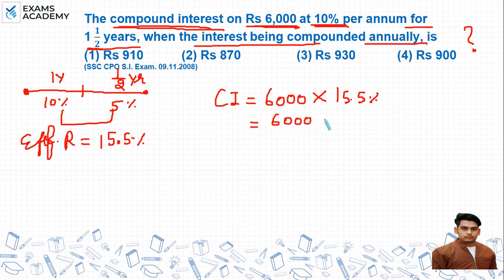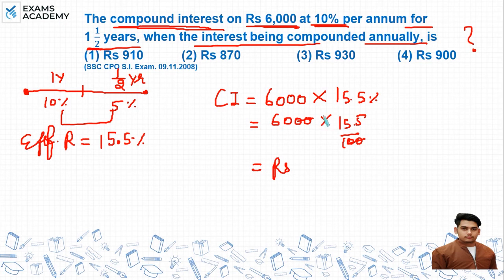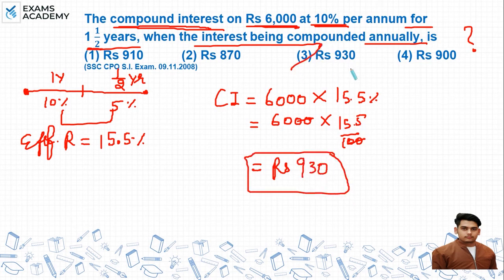Now to find compound interest, we calculate 15.5% of 6000. So solving this: 15.5 over 100, multiplying it with 6000, the compound interest comes out to rupees 930. So the correct option is option number three — rupees 930.